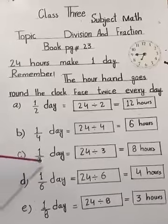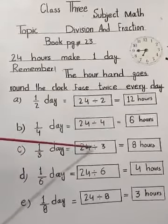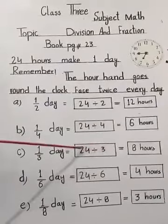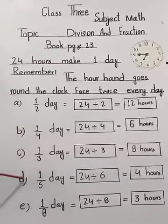Part C, 1 over 3 days. 24 divided by 3. 3 eights are 24, 8 hours.